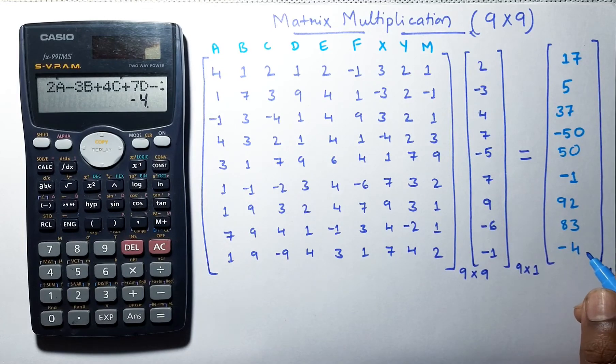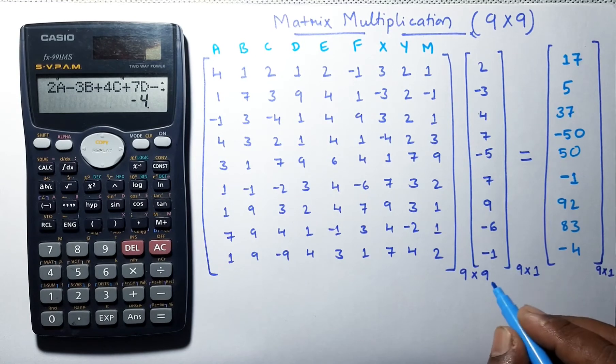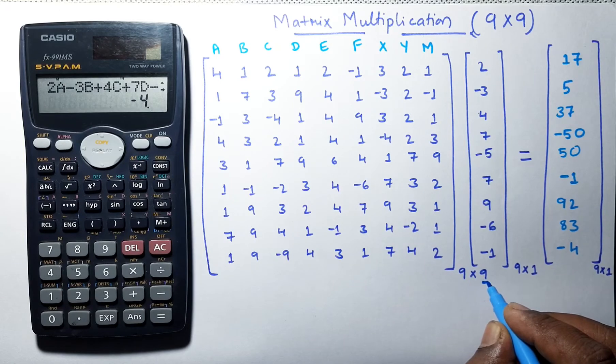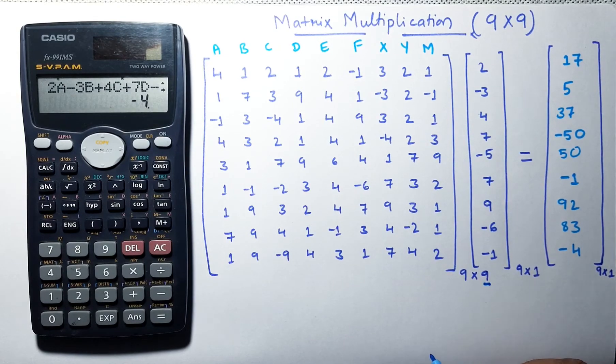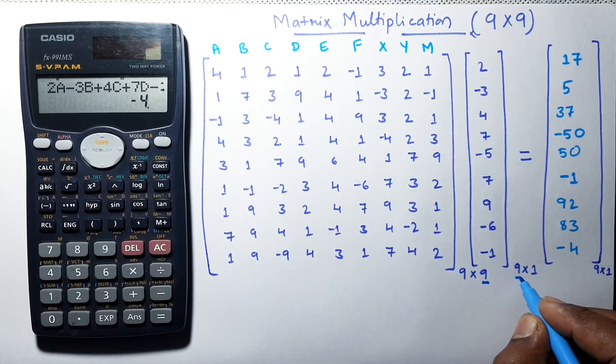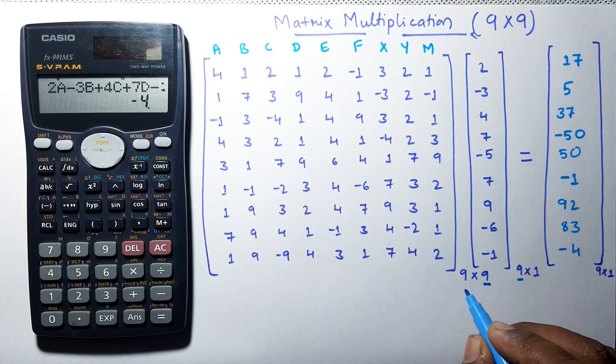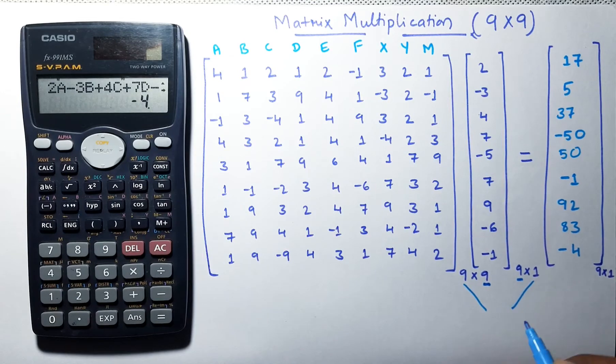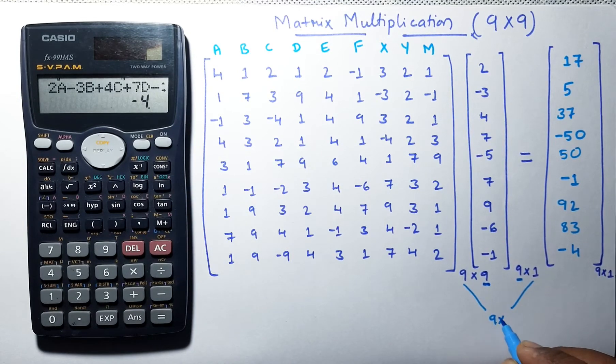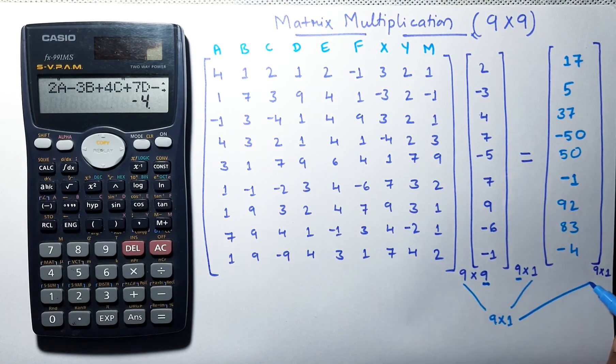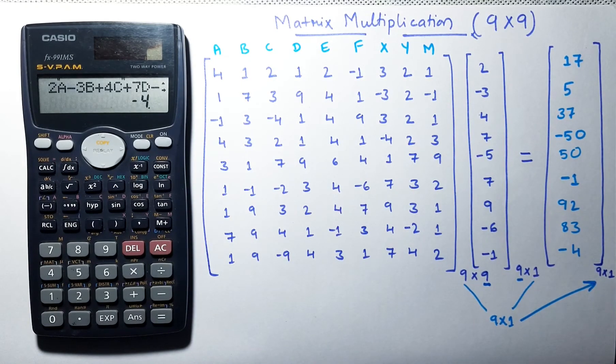In this way, we can multiply any order matrix, but we have to see for this condition: number of columns in first matrix should be equal to number of rows of second matrix. If this condition satisfies, we can multiply this matrix. And this number of rows of first matrix and number of columns of second matrix indicates the order of resultant matrix, which is answer of our matrix multiplication.